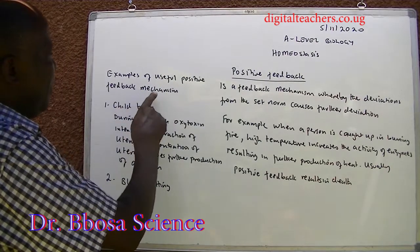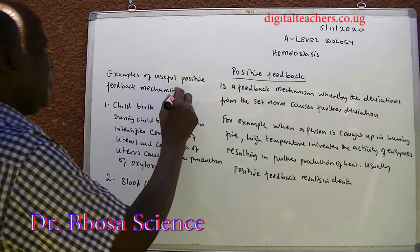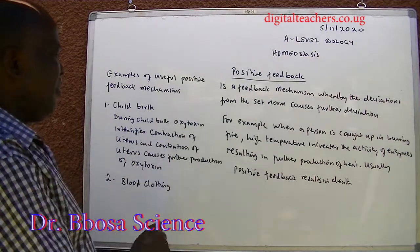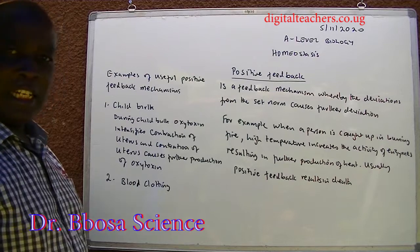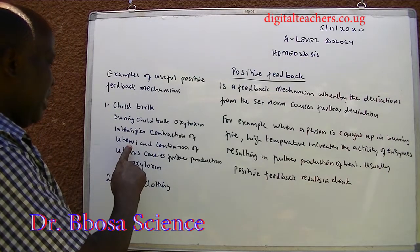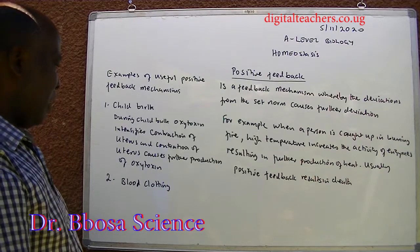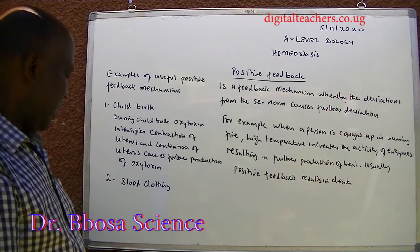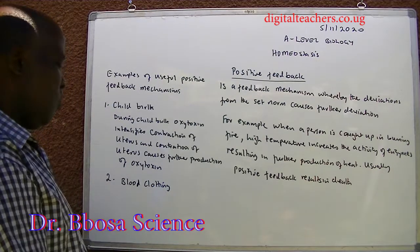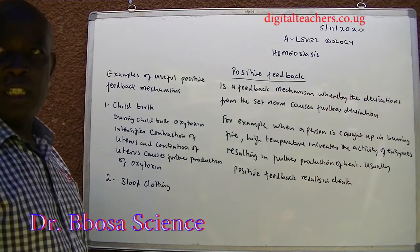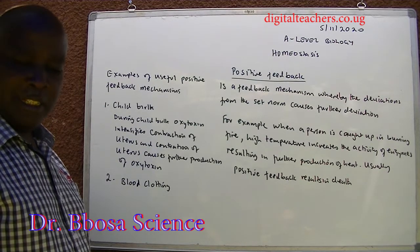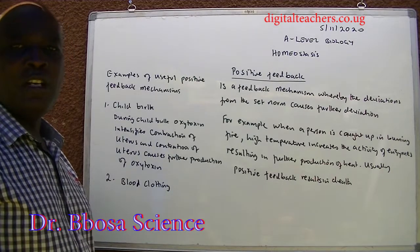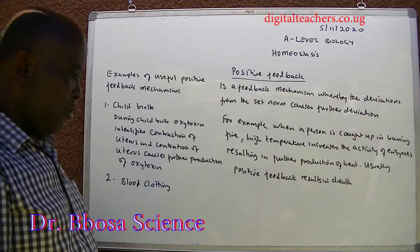Examples of useful positive feedback mechanisms. One: childbirth. During childbirth, oxytocin intensifies contraction of the uterus, and contraction of the uterus causes further production of oxytocin. Two: blood clotting. Once the blood clotting mechanism is set up, it goes on until a blood clot is formed.